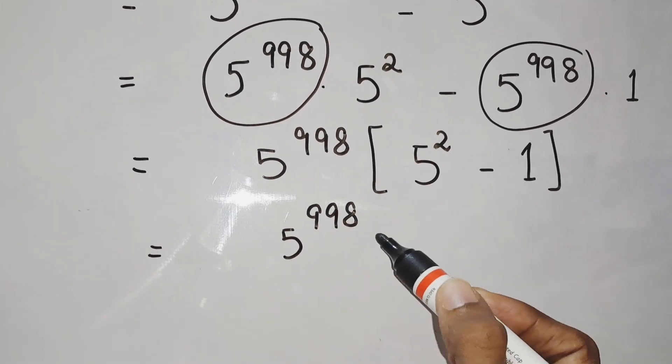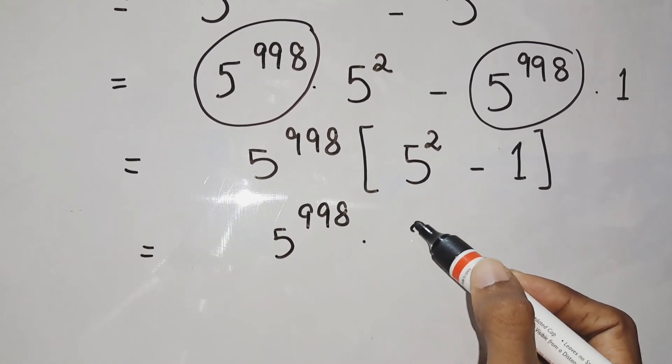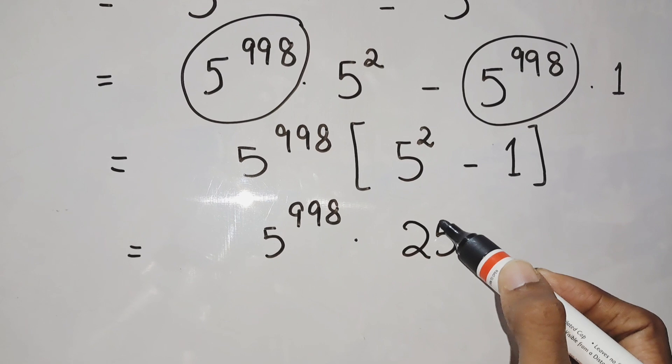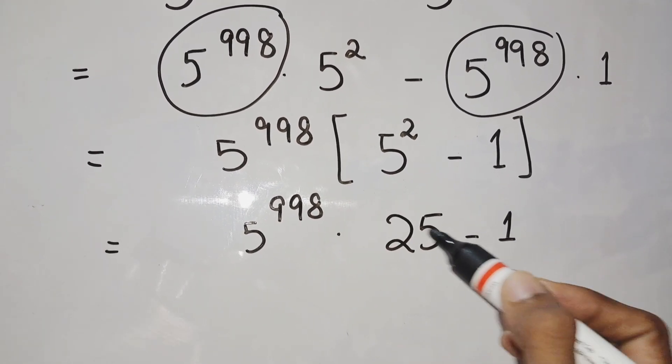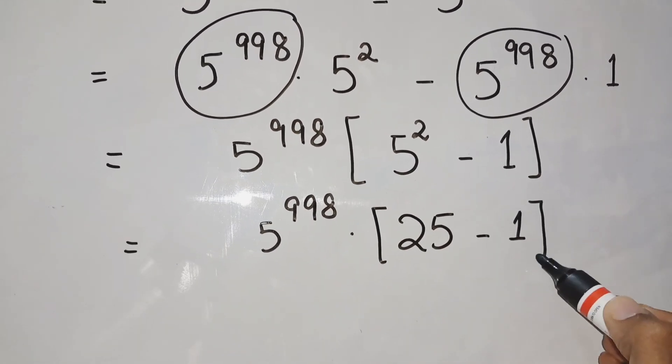That is 5 to the power 998 into what is 5 square? 5 square is nothing but 25, and minus 1 as it is. This is the bracketed operation.